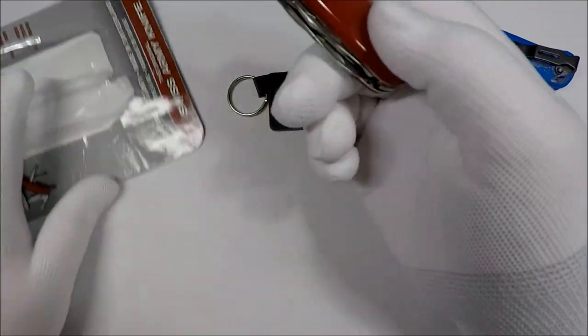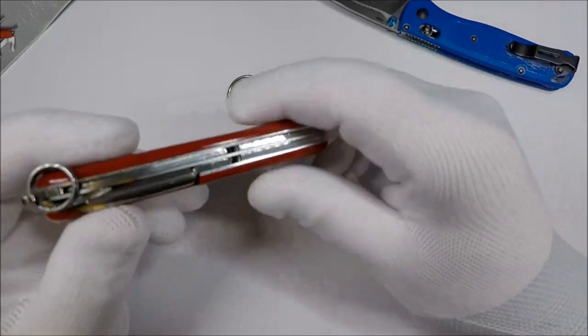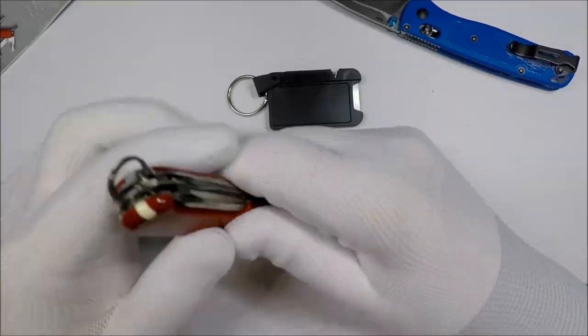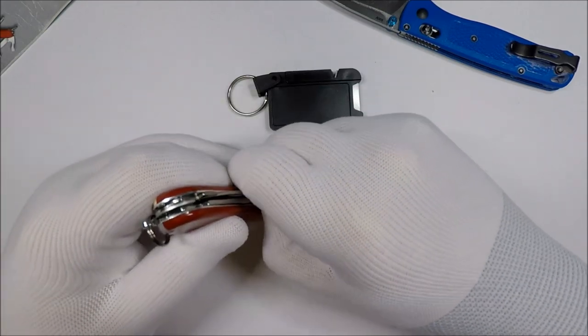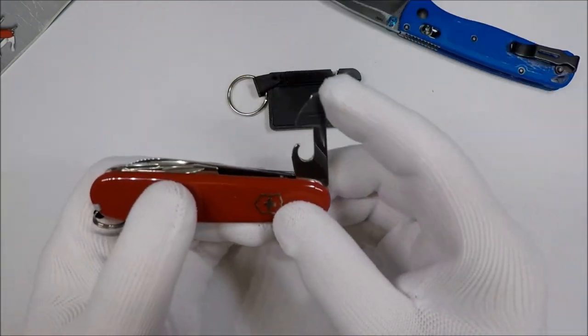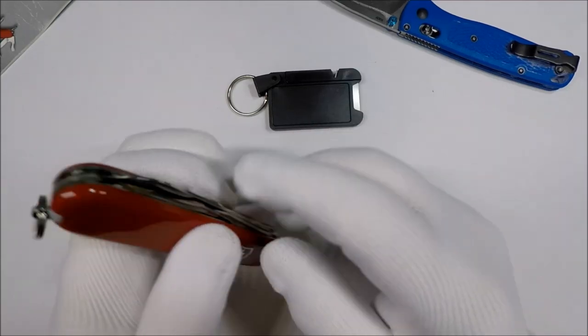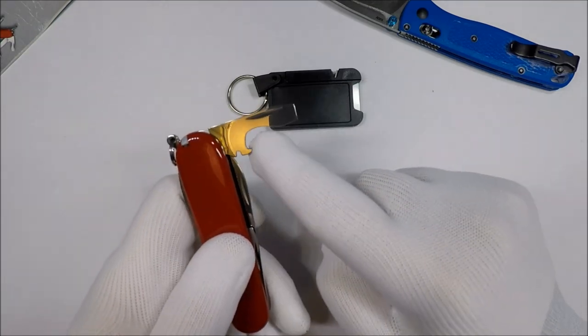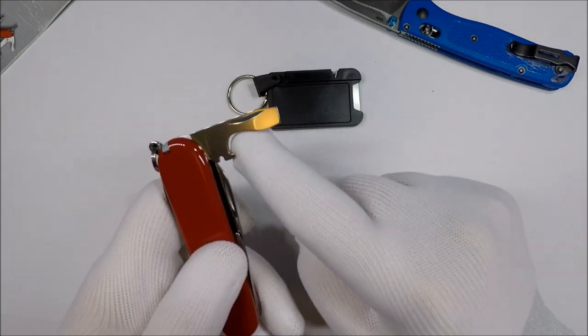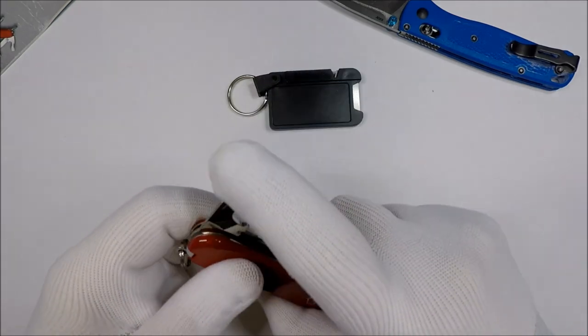So, you get a usual tinker, not like a tinker plus or anything. And the tinker, if you remember, has the normal usual Victorinox can opener, and regular small screwdriver. And then you have the bottle opener, large flathead screwdriver, and the wire stripper.